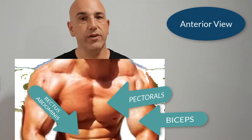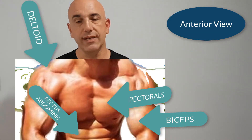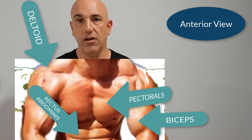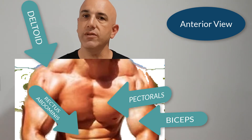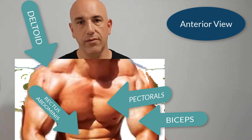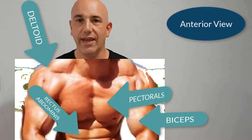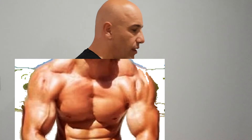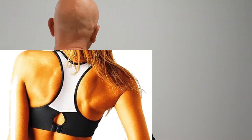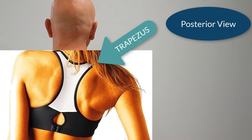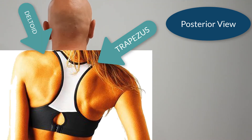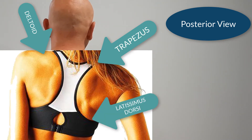On the back — the posterior view — you can see the trapezius, the deltoid, the latissimus dorsi, and the erector spinae.